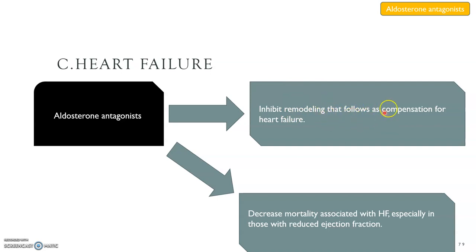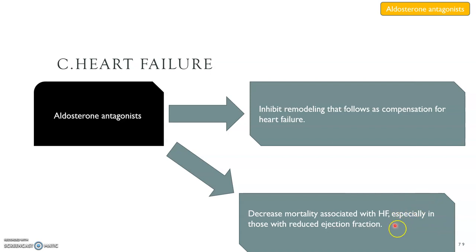The third indication is heart failure. Aldosterone antagonists inhibit remodeling of the heart that follows as compensation for heart failure, and they can decrease mortality associated with heart failure — especially in patients with reduced ejection fraction, where aldosterone antagonists are associated with decreased mortality.